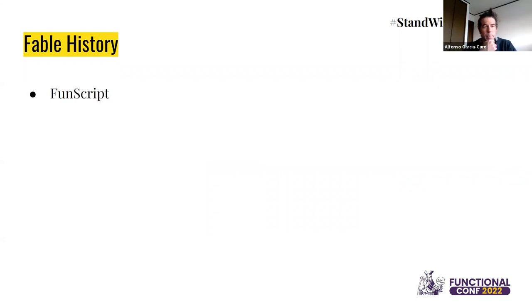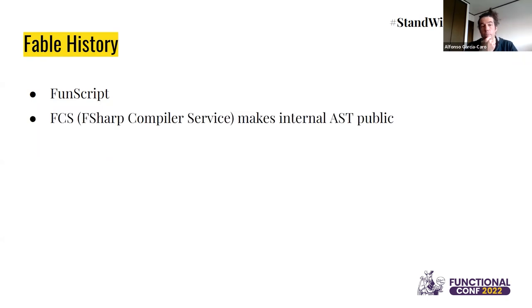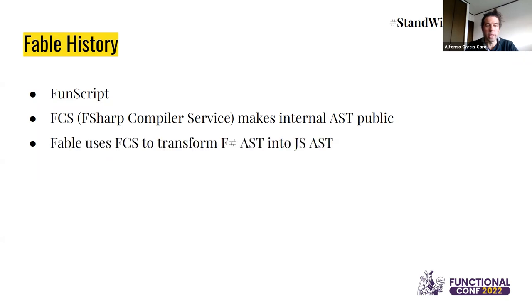Talking about Fable history — what has happened in these eight years. First I'd like to mention Fanscript, which was another F# to JavaScript compiler that existed before. It had the best name ever. Fanscript used to use a feature of F# called code quotations. But at one point, the F# Compiler Service — the F# compiler used as a library — exposed the internal AST, which stands for Abstract Syntax Tree. This gave me an opportunity to write a new compiler that would use the F# compiler directly to transform the F# AST into a JavaScript AST.